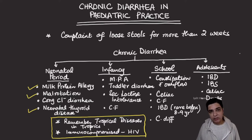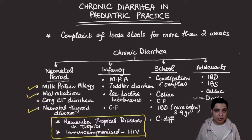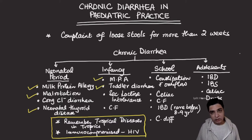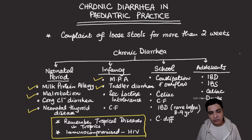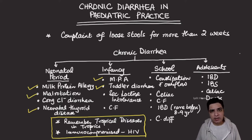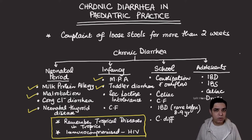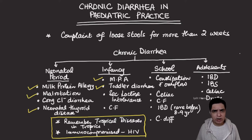In infancy, cow milk protein allergy can extend and remains the commonest cause of diarrhea. Another common cause is toddler's diarrhea, seen in children on weaning diets around seven to eight months onward, due to incomplete absorption of some dietary components. They may pass what is described as pea soup diarrhea — with formed and unformed elements and undigested particles — while otherwise thriving well with no weight loss.